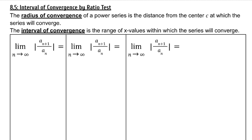The radius of convergence of a power series is the distance from the center C at which the series will converge. The interval of convergence is the range of x values within which the series will converge.